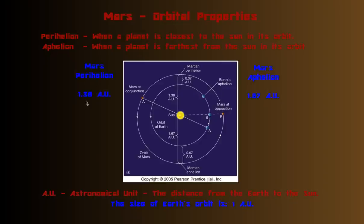Mars' aphelion is 1.38 AU. I'm sorry, perihelion. And Mars' aphelion is 1.67 AU. So what is an AU?